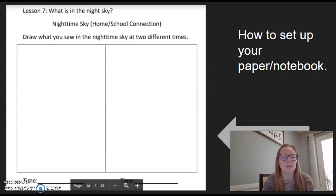What you're going to do is on a piece of paper or in a notebook at home, set your page up just like this picture right here. At the top you can write 'What is in the nighttime sky' and you're going to draw two boxes, or one big box and then split it down the middle so that you have two sections in your notebook.